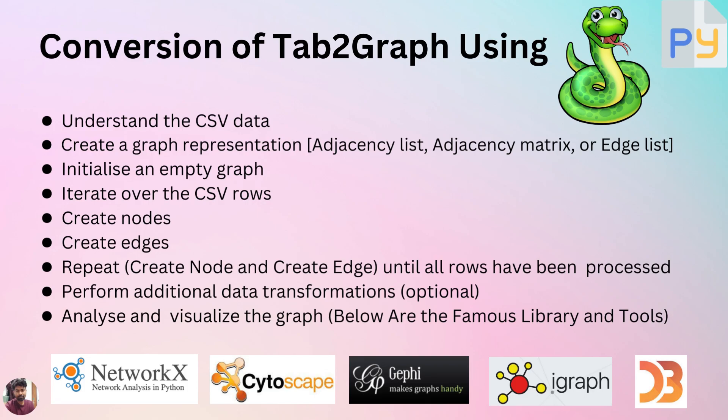Next, we iterate over the CSV rows. For each row, we create a node in the graph to represent the entity or object described in the data. Nodes can be created based on specific columns in the CSV, such as a unique identifier or a label. After creating the nodes, we create edges to represent the relationships or connections between entities, based on relationships defined in the CSV such as a shared attribute or a reference between entities.